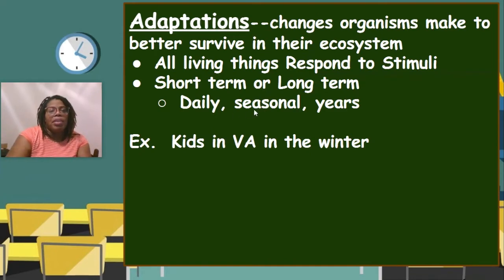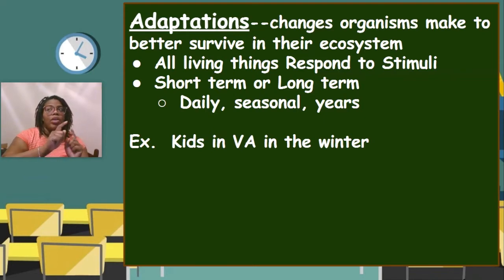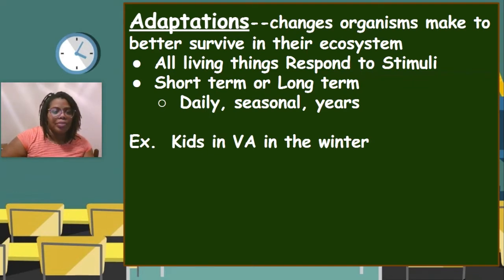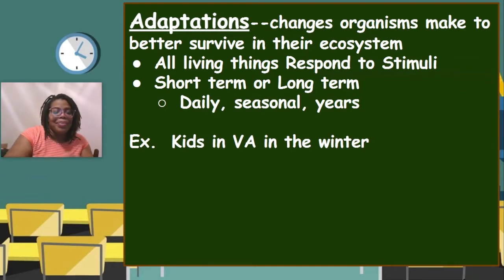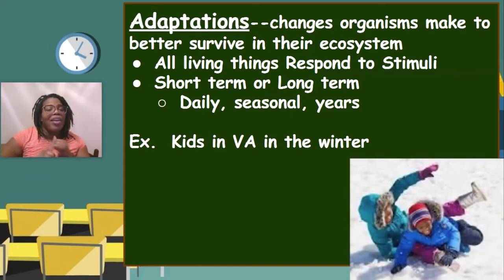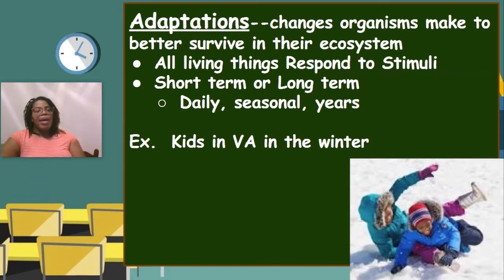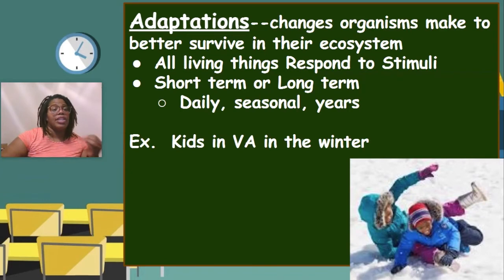Here's a quick example of an adaptation you're very familiar with. We live in Virginia, where it gets cold, and when it does, we don't go outside in our tank tops and shorts. Instead, we change what we're doing to survive better — we put on coats, snow boots, hats, and gloves so we don't get frostbitten and can survive in our ecosystem. Animals and plants also adapt to changing weather and temperature in Virginia; they don't put on coats, but they do something else.